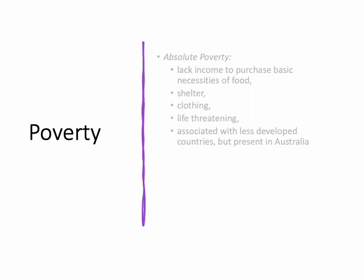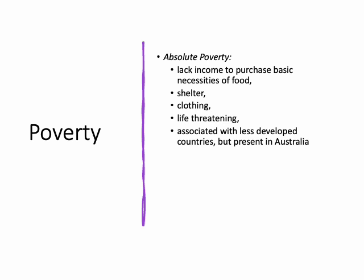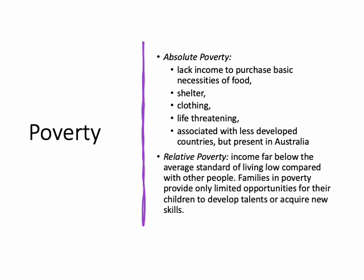Absolute poverty means you are on the poverty line or below — generally people on Centrelink benefits such as single mother payments or disability allowance sit at or below that poverty line. Absolute poverty means lacking income to purchase basic necessities; our homeless people are in absolute poverty. Relative poverty is those living within our benefit systems where income is far below average, leading to a low standard of living compared to others.